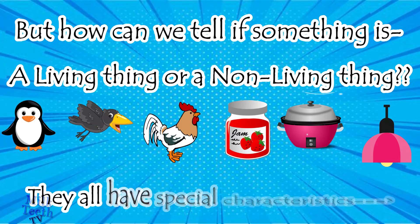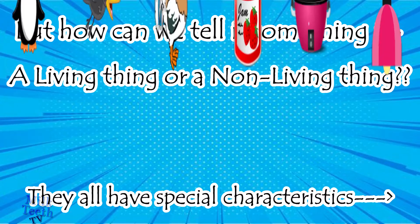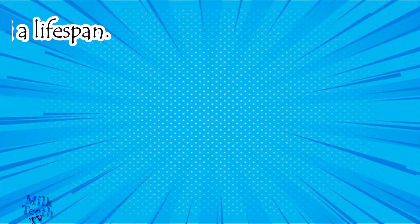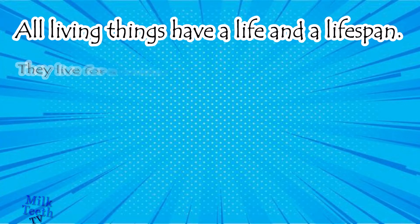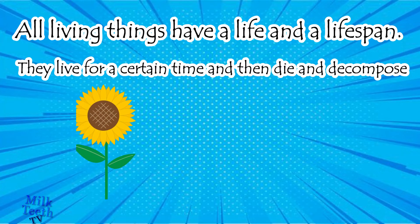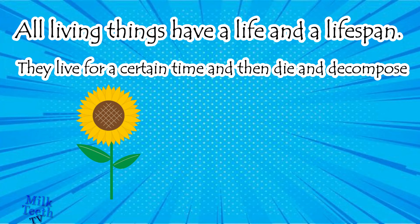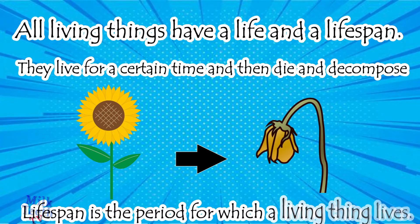All living things have special characteristics. They have a life and a lifespan — they live for a certain time and then die and decompose. Look at the sunflower: after some time, whether you pluck it or not, it will wither away and die. Lifespan is the period for which a living thing lives.